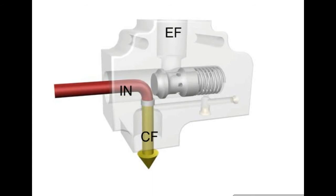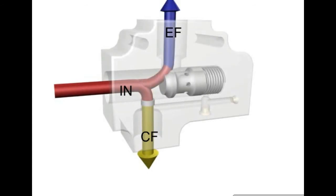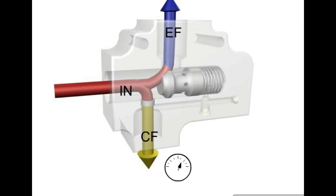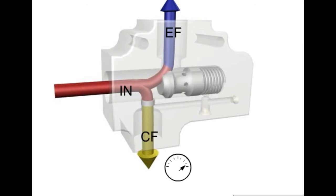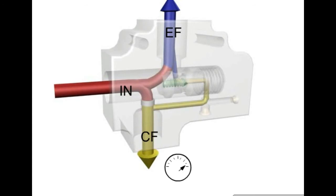Fluid entering the inlet is metered through the orifice where it flows to the controlled flow port. Excess flow trying to pass through the orifice causes the pressure drop to increase. The upstream pressure pushes the spool to the right, compressing the spring and opening the passage, allowing the remainder of the flow to exit the excess flow port. The spring and the spool work together to maintain a constant pressure drop, resulting in a constant flow across the orifice and diverting excess flow to the excess flow port. If pressure in the priority circuit reaches the relief valve setting, the relief valve opens and diverts the priority flow to the reservoir.